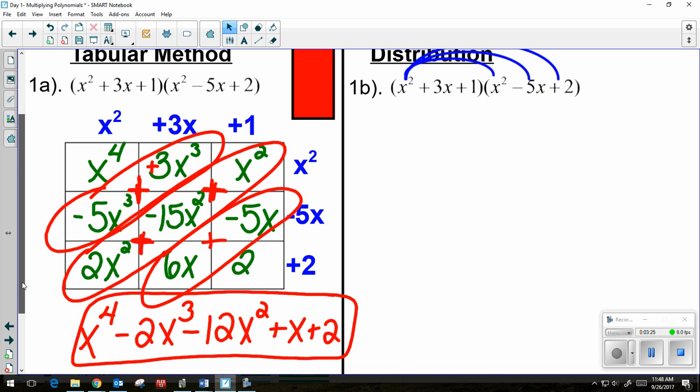So the first thing I'm going to distribute is that x squared. So x squared times x squared is x to the fourth. x squared times negative 5x is a negative 5x cubed. x squared times 2 is a positive 2x squared.